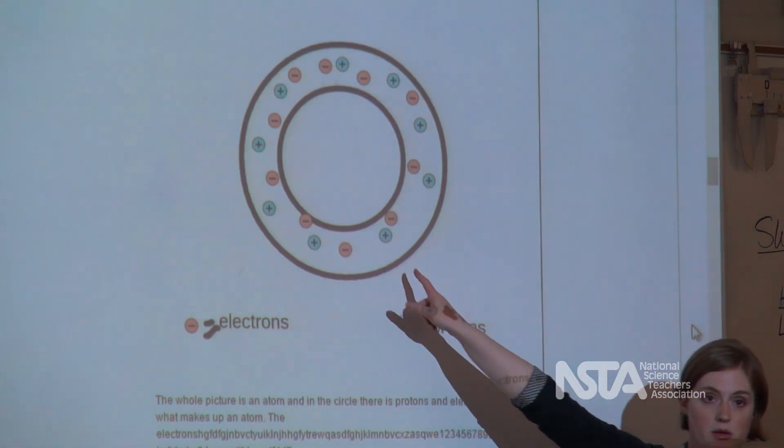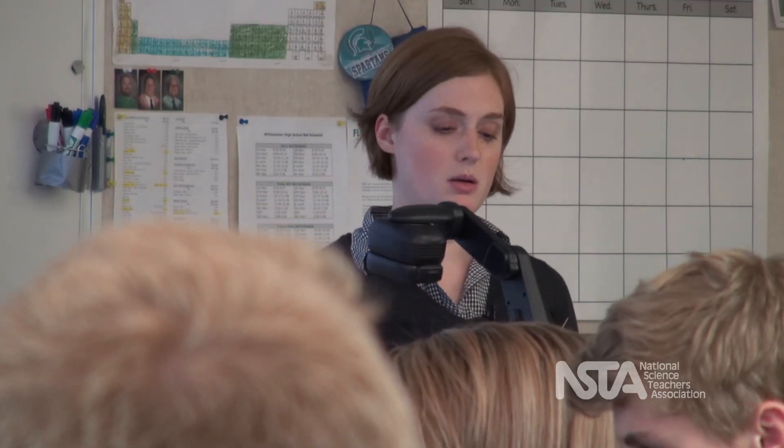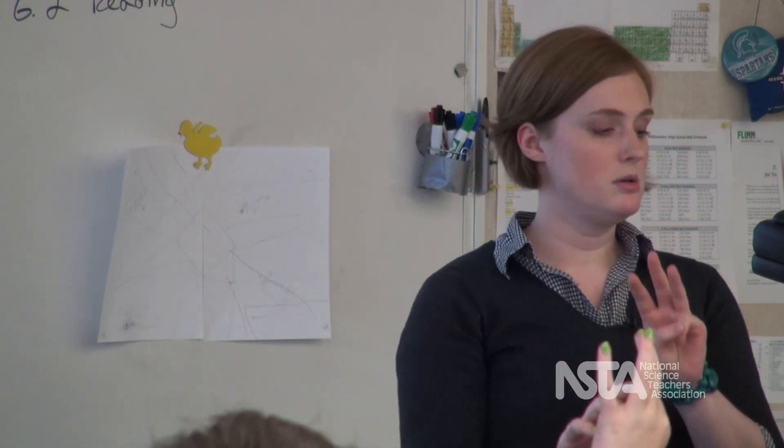The models are anonymous, so students focus on evaluating the content of the models rather than on other students' work. In the models of the atom that you drew for number 12, your models need to be able to explain three different things: that there are negative pieces, that those pieces are smaller than an atom, and that those pieces could come from any kind of atom. So let's take a look at the models you guys drew.